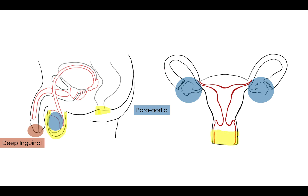In yellow here, we have the scrotum, the external part of the anus, and the external parts of the female genitalia. These are things that we could touch with our hand — so these are the superficial inguinal nodes.